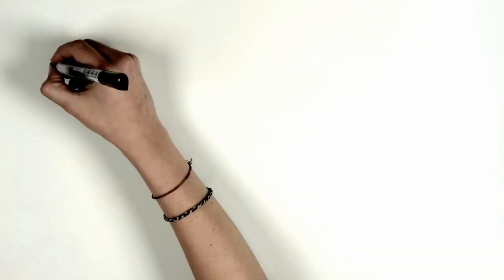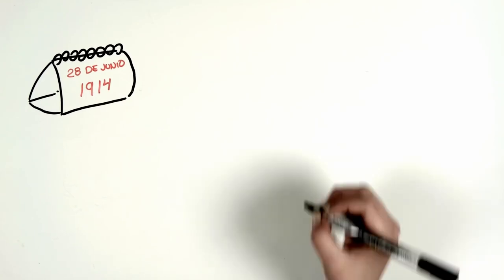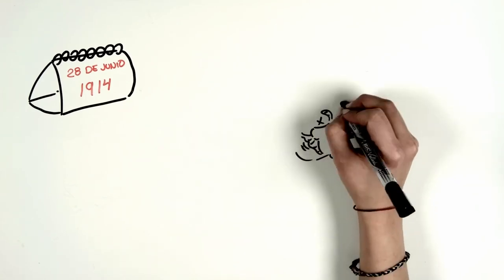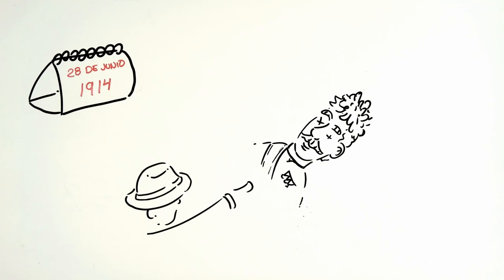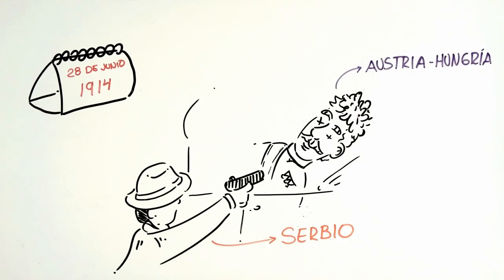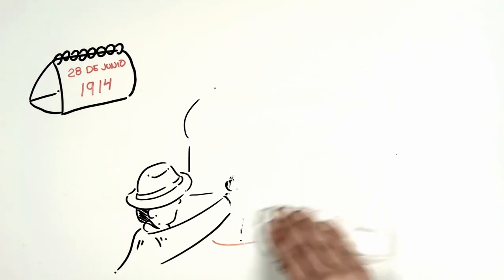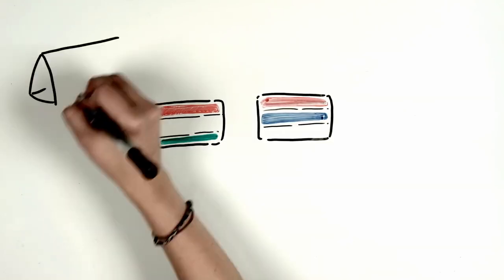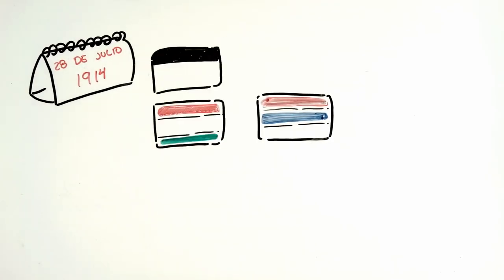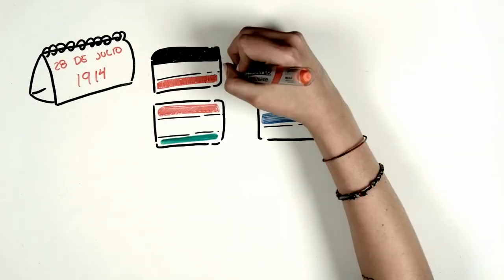However, the definitive trigger was the murder of Archduke Franz Ferdinand, heir to the throne of Austria-Hungary, by a Bosnian Serb nationalist during his visit to Sarajevo. At that moment, events accelerated. Austria-Hungary blamed Serbia for the attack, and on July 28th, knowing it had the support of Germany, declared war on Serbia.